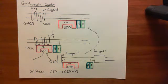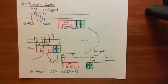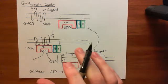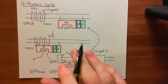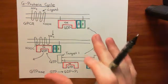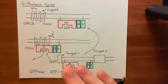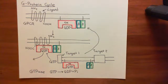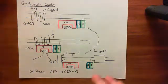Welcome back to this next video in which we are discussing the adenylyl cyclase protein kinase A pathway. We've just discussed the G-protein cycle, which is the cycle of activation of heterotrimeric G-proteins by a G-protein coupled receptor. What we now want to do is go away from this general setup and look specifically at certain heterotrimeric G-proteins which are going to be activated by certain G-protein coupled receptors, and which are then going to activate adenylyl cyclases.